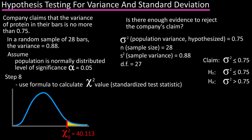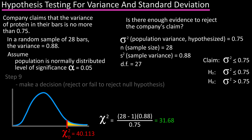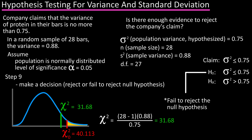Step eight is to use the formula and calculate the chi-square value. Using the formula, we have chi-square equals 28 minus 1 times 0.88 divided by 0.75. Calculating out, we get chi-square equals 31.68. Step nine is to make a decision to reject or fail to reject the null hypothesis. On our graph, the standardized test statistic does not fall in the rejection region, as chi-square (31.68) is less than chi-square naught (40.113), the critical value. So we fail to reject the null hypothesis.